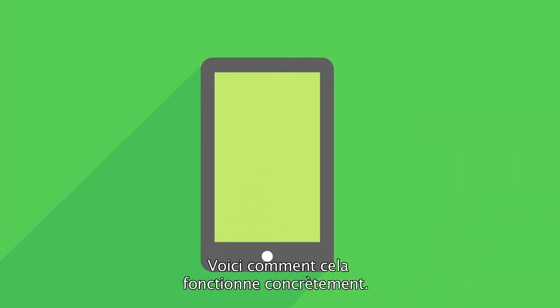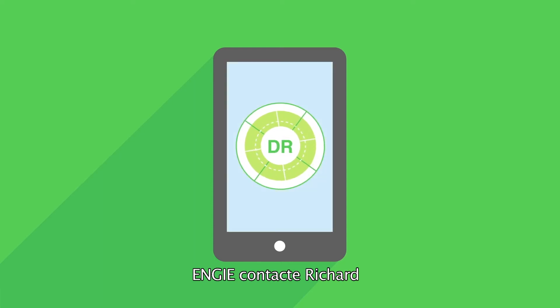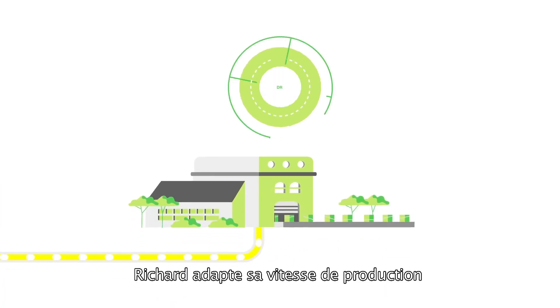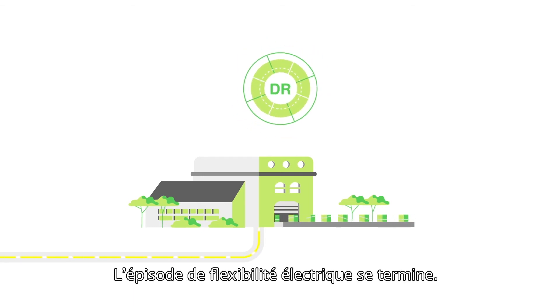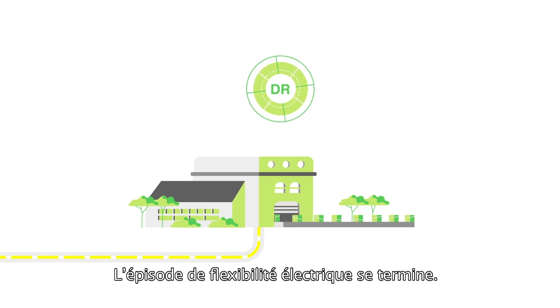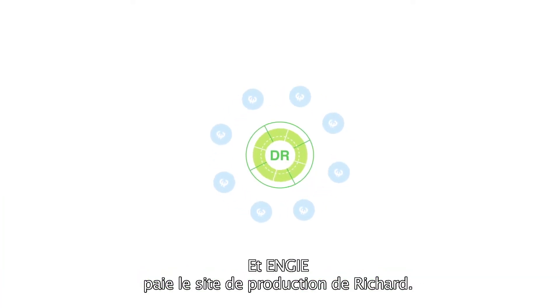Here's what that looks like in action. Engie contacts Richard to let him know there's a DR event coming up. Richard temporarily adjusts his production speed to lessen his energy consumption. The DR event ends. Richard readjusts his production speed. And Engie makes its payment to Richard's company.